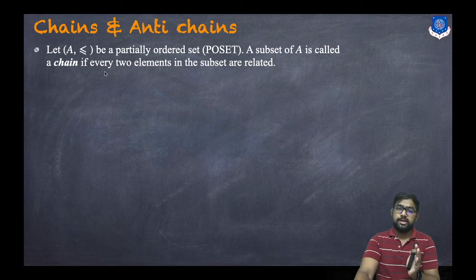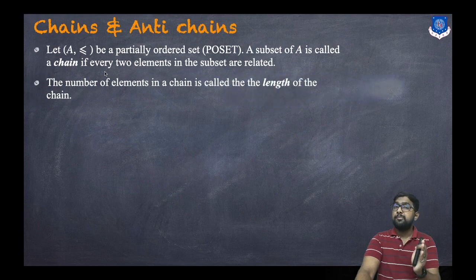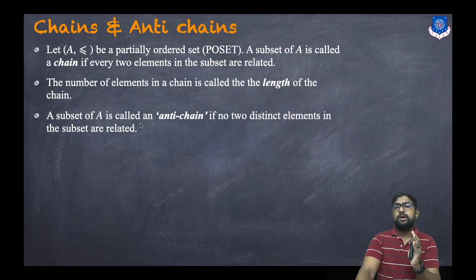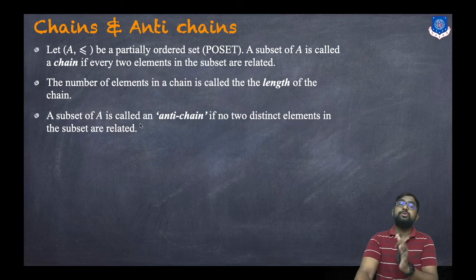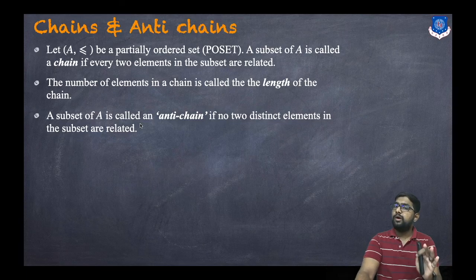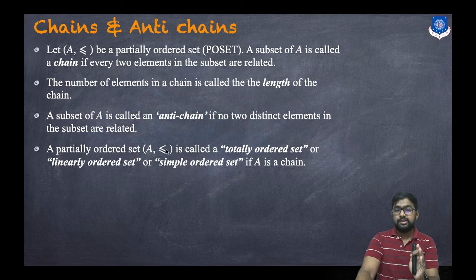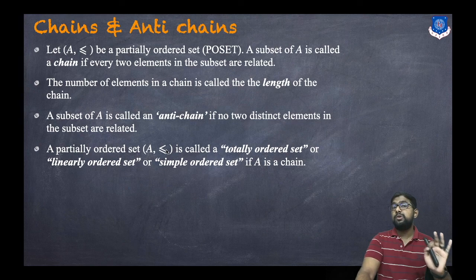A subset of A is called a chain if every two elements in the subset are related. The number of elements in a chain is called the length of the chain. A subset of A is called an anti-chain if no two distinct elements in the subset are related. A partially ordered set (A, ≤) is called a totally ordered set, linearly ordered set, or simply ordered set if the whole set A is a chain.